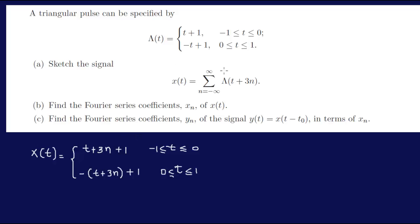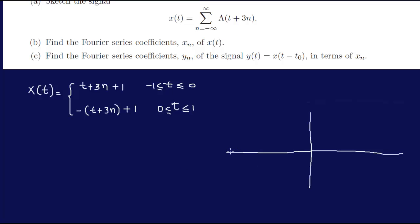We can shift it to the left and get the result. So first, let's graph λ(t) alone. I have 0 here, then 1, 2... It's not up to scale, but you get the point.